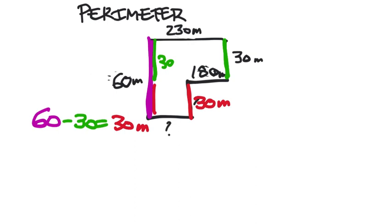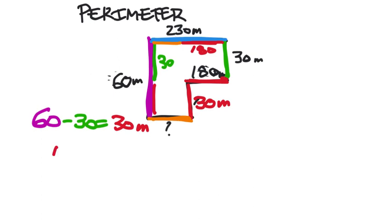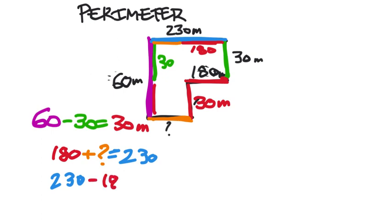We're moving these side lengths over to compare with the longer side, and we'll do the same thing with the horizontal side lengths. Starting with 230, that's the long side. The 180 makes up that much of the 230. So this other unknown length would be the remaining part. You could write a fact family: 180 plus this unknown side length equals 230 meters, which still translates into a subtraction problem — 230 minus 180 — and that equals the unknown orange side length.